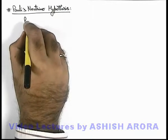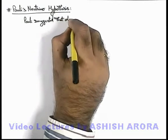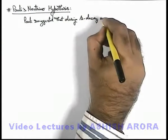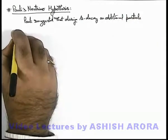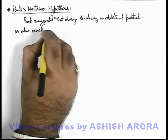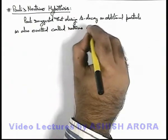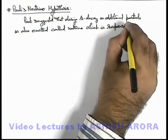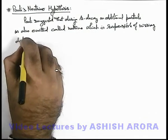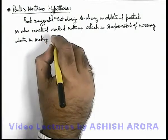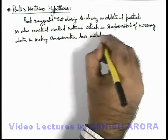Let's first write down about it. Pauli suggested that during beta decay, an additional particle is also emitted, called the neutrino, which is responsible for the missing data in making the conservation laws valid in this process.